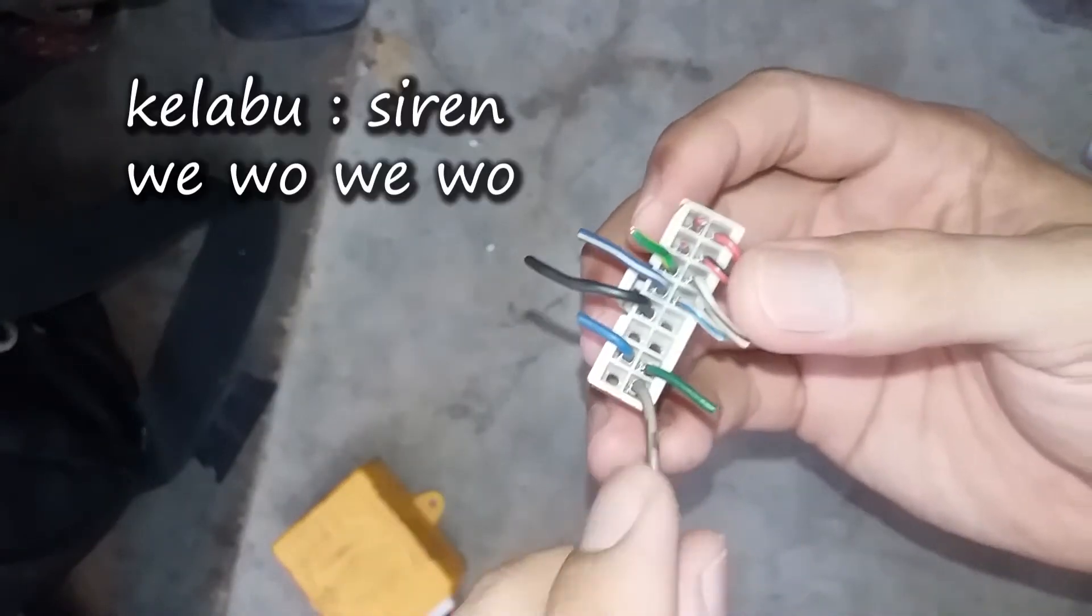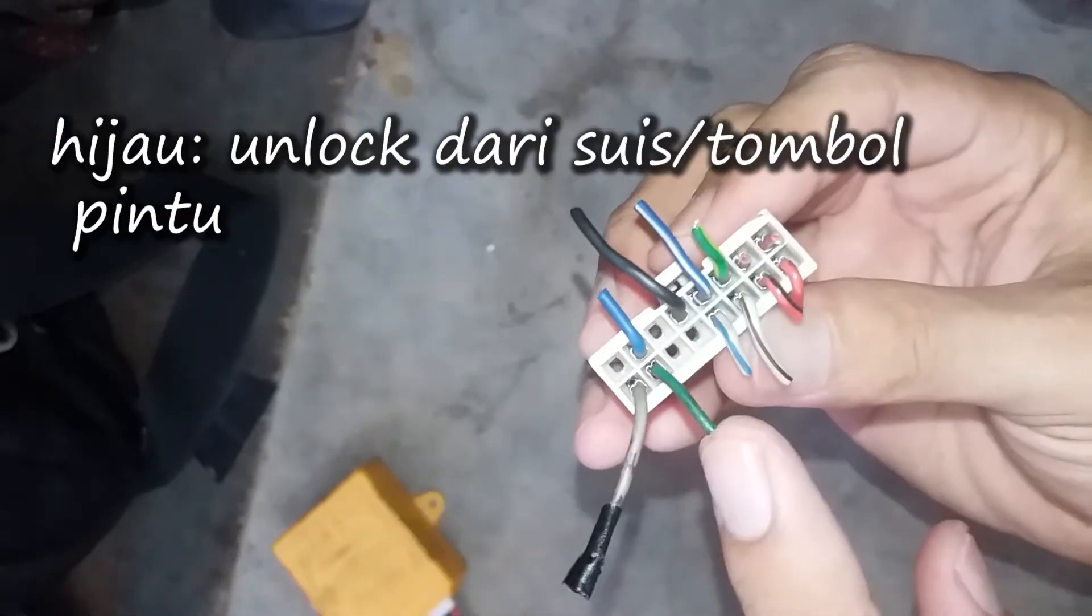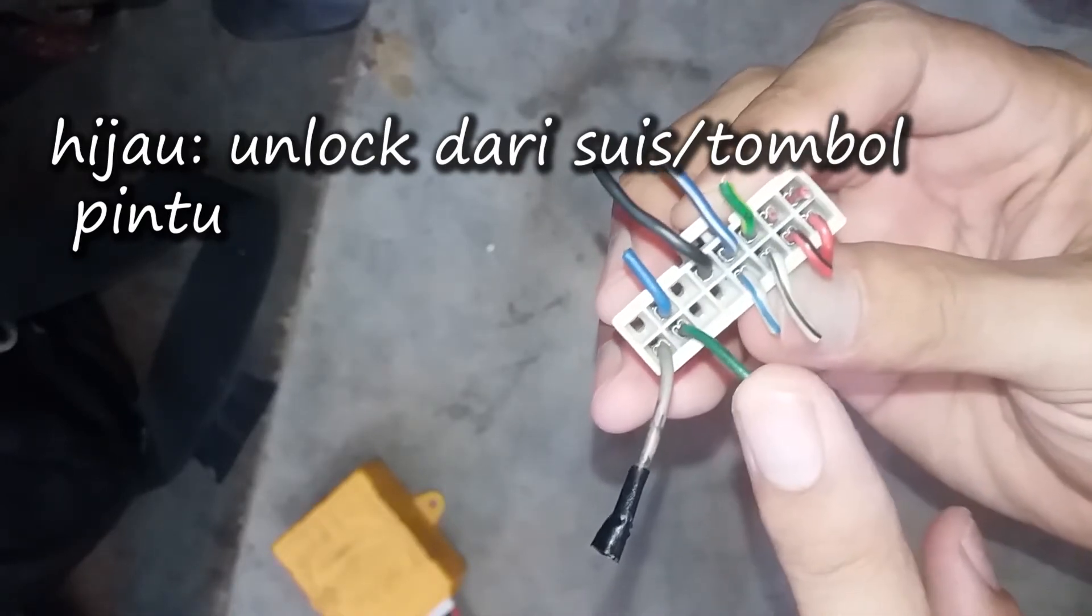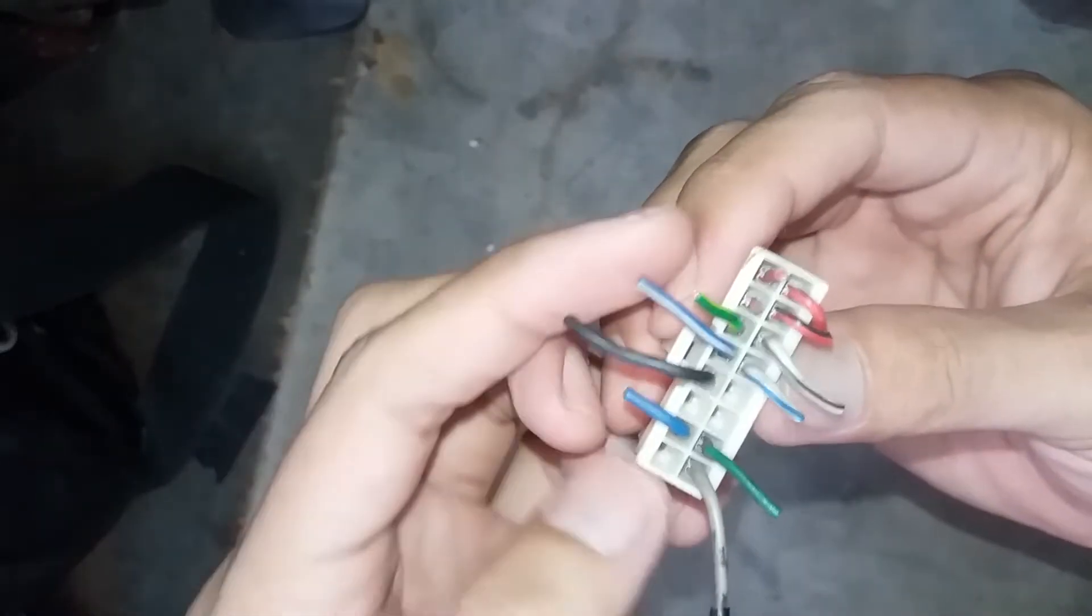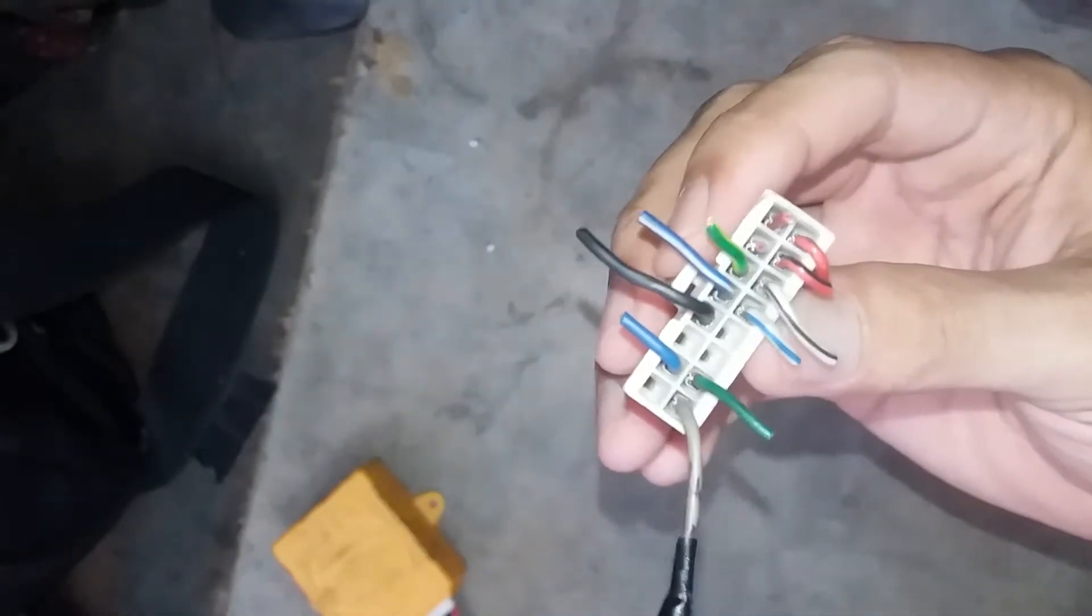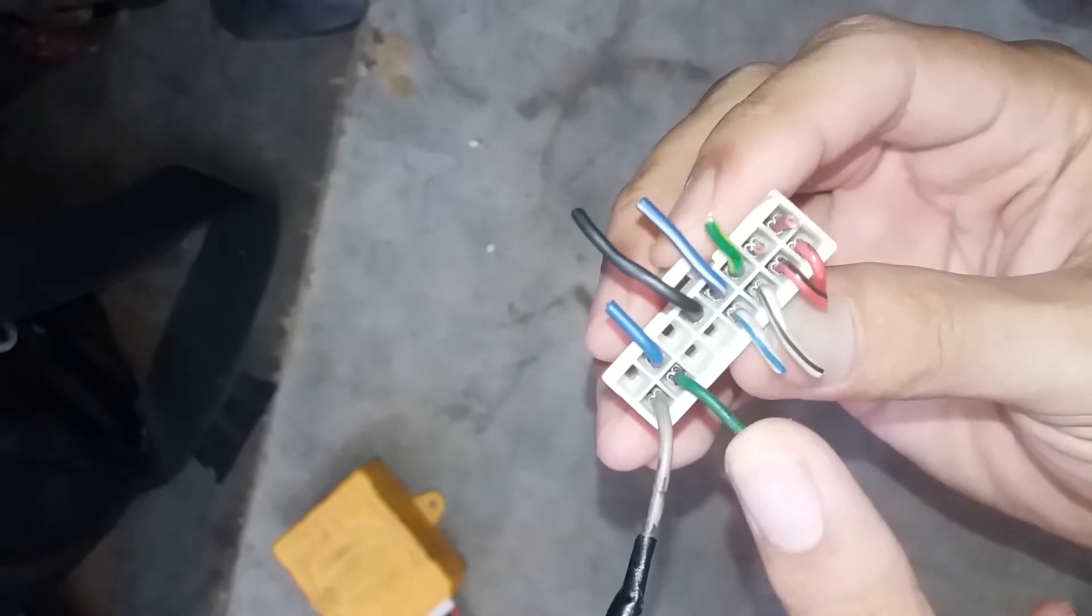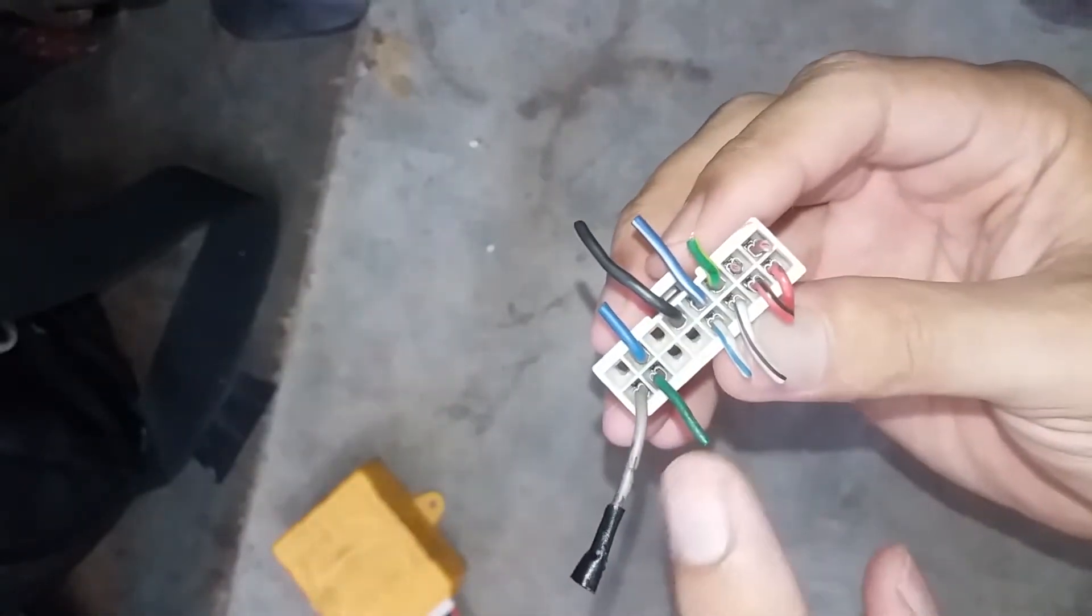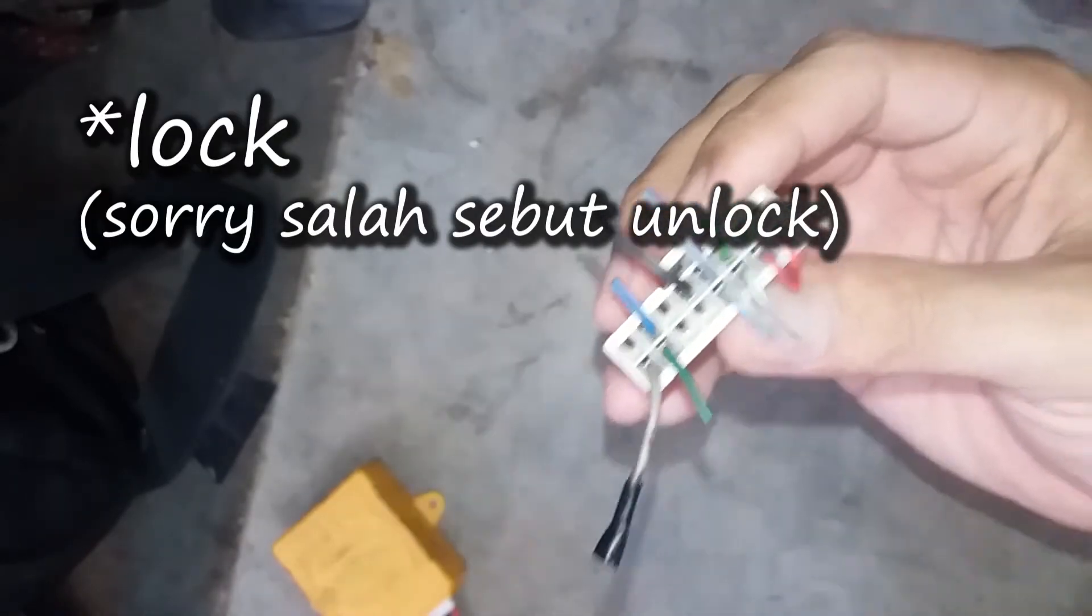At the bottom here, gray is siren, connected to the siren. Then green is unlock from the switch, from the door, from the switch at the door. Like the blue one above is from the actuator in the door, this green one is from the switch. Now cars have a switch to press lock and unlock - this connects to that switch or the manual door button we pull down.